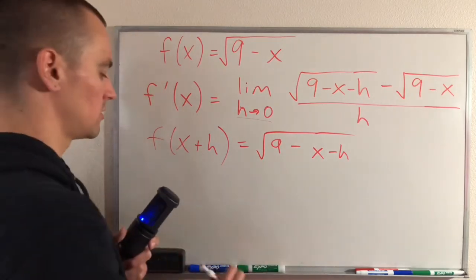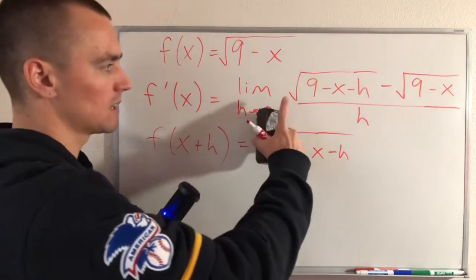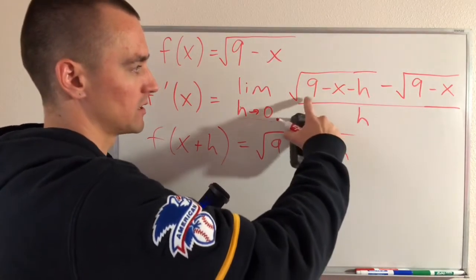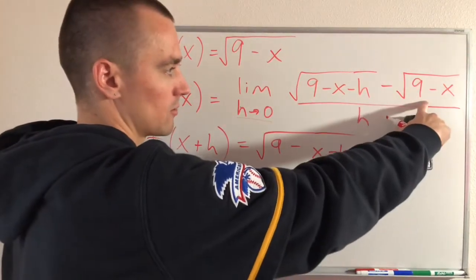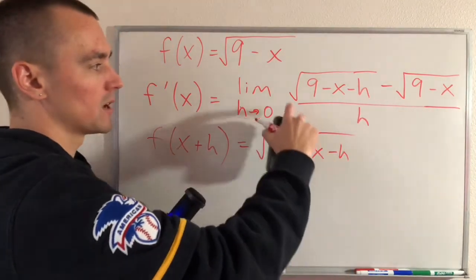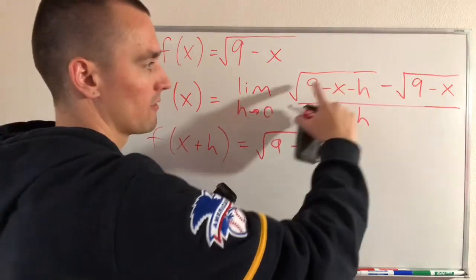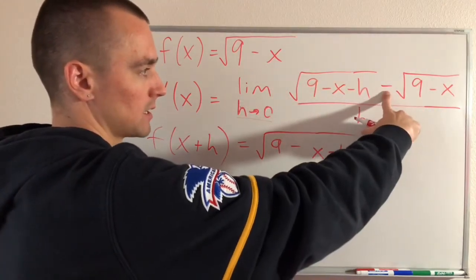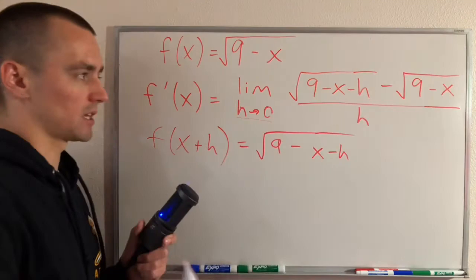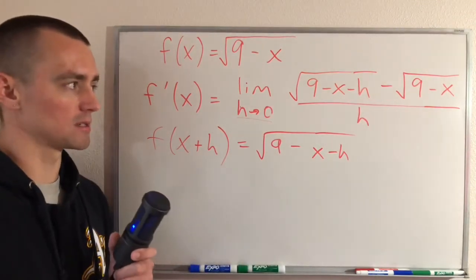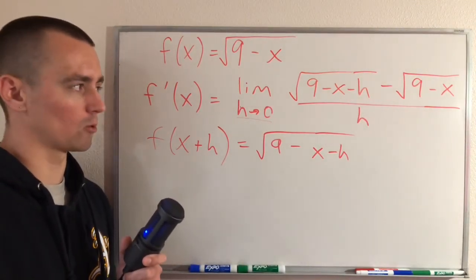But basically all we have to do is take what we have here on our numerator. We have this square root minus this other square root. If we multiply the top and the bottom of this fraction by exactly what we have on our numerator, but we change this minus sign to a plus sign, it's going to result in some pretty interesting things that make this fraction a lot easier to work with.